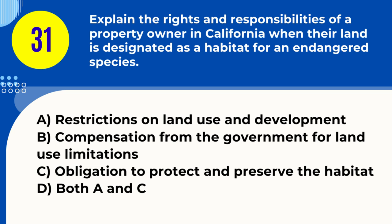Question 31. Explain the rights and responsibilities of a property owner in California when their land is designated as a habitat for an endangered species. A. Restrictions on land use and development B. Compensation from the government for land use limitations C. Obligation to protect and preserve the habitat D. Both A and C. Answer: D. Both A and C. Explanation: Designation as an endangered species habitat may restrict land use and development, and owners have an obligation to protect the habitat.